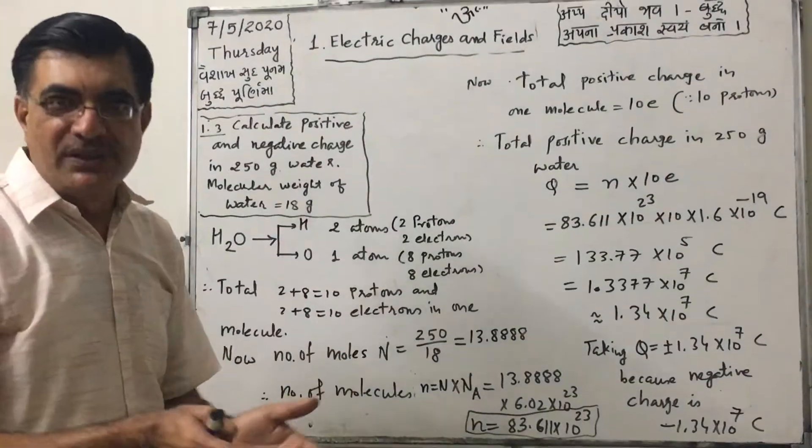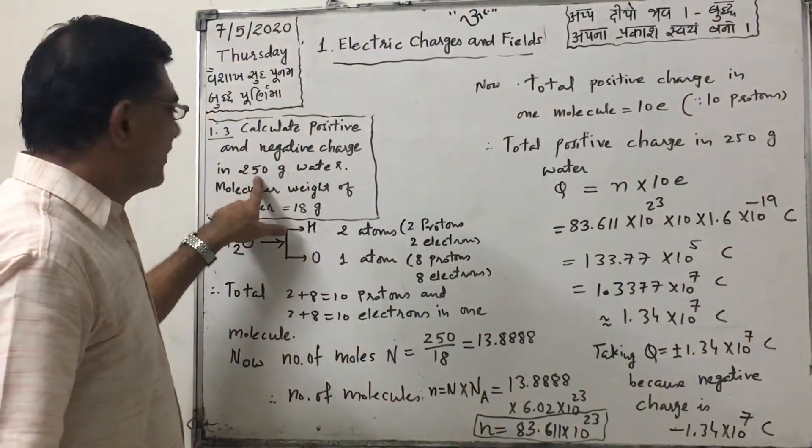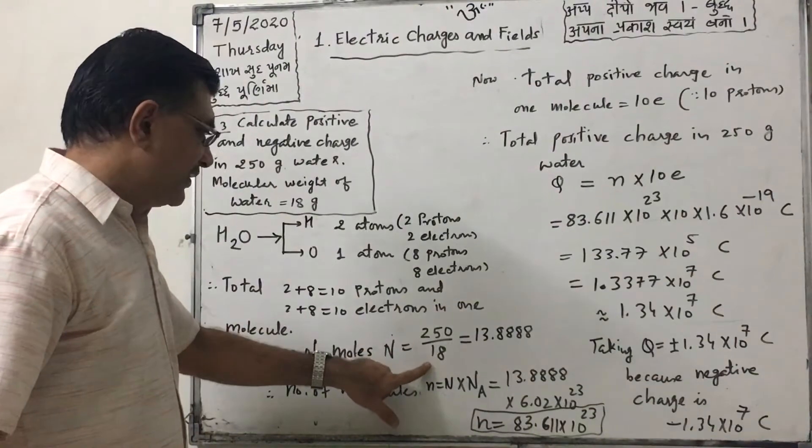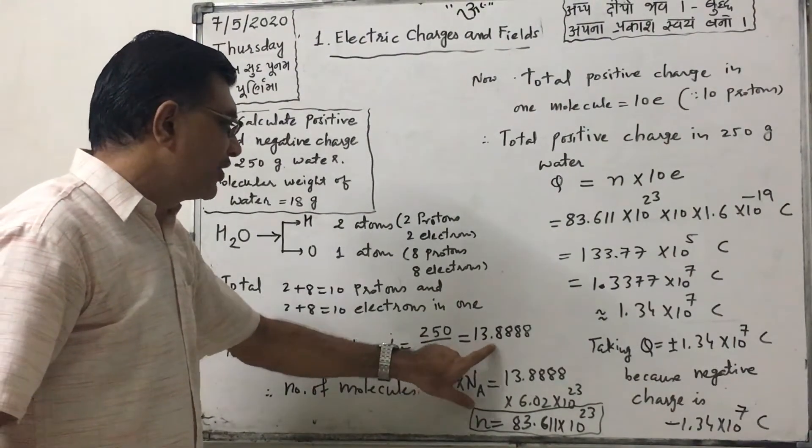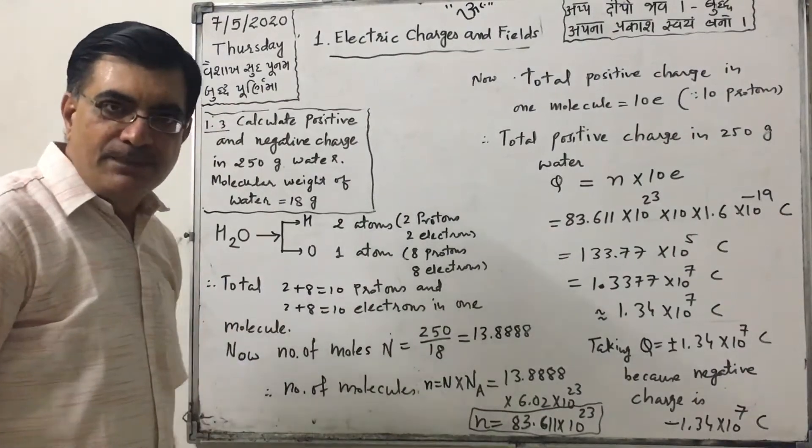Now first of all, we have to find out number of moles. So that is weight upon molecular weight. So 250 upon 18. So 13.8888 moles of water.